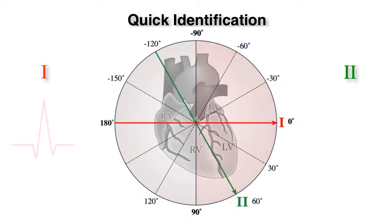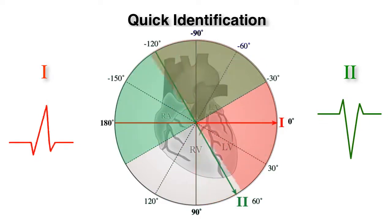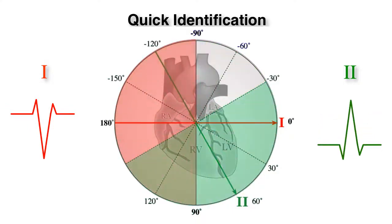If lead one is positive and lead two is positive, the axis is likely to be normal. If lead one is positive but lead two is negative, there is left axis deviation. If lead one is negative, yet lead two is positive, there is right axis deviation.